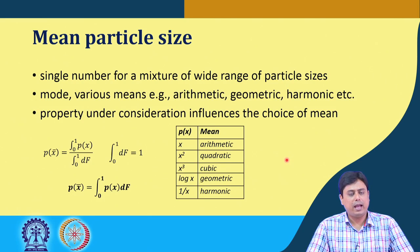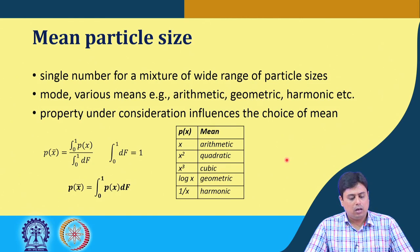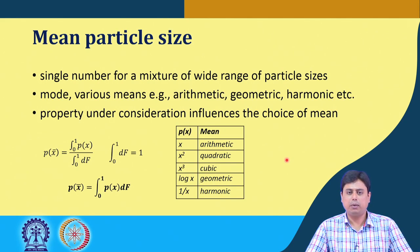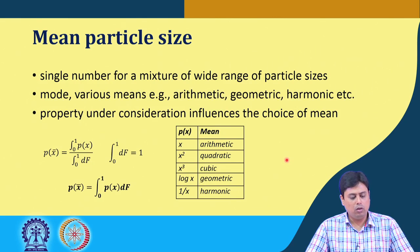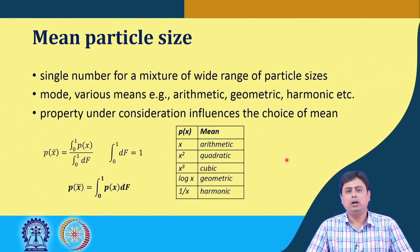We have the size distribution curve. As mentioned, we need a mean or a single number — as seen in the previous two slides, one by median and the other by mode. Those are not the only practices; there can be several ways to find a single number to represent a mixture with a wide range of particle sizes. For example, there is mode, and there are various means such as arithmetic mean, geometric mean, harmonic mean, and others.